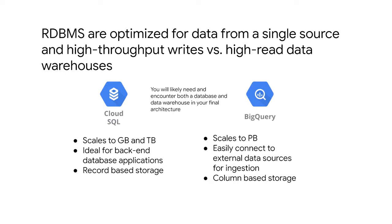The fundamental architecture of the data storage options is very different. Cloud SQL databases are record-based storage, meaning the entire record must be opened on disk even if you just selected a single column in your query. BigQuery is column-based storage, which allows for really wide reporting schemas, since you can simply read individual columns out from disk.